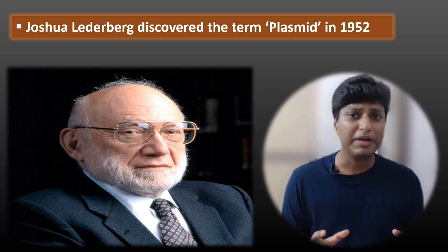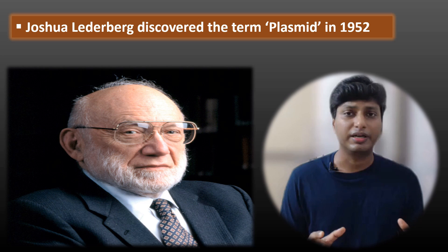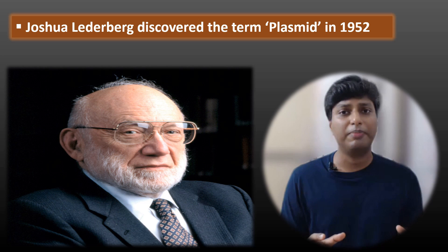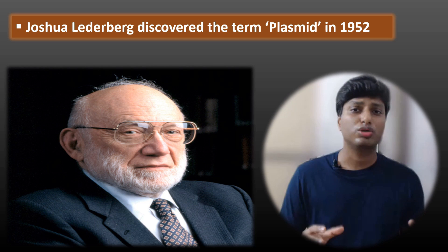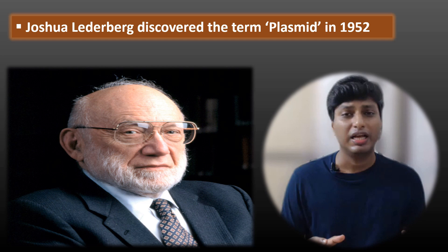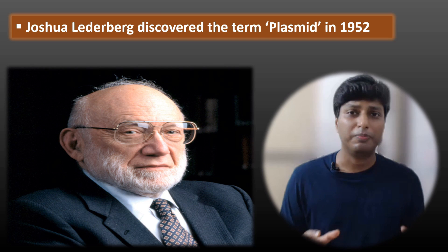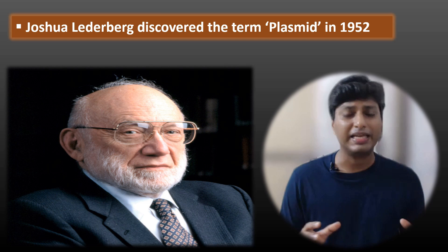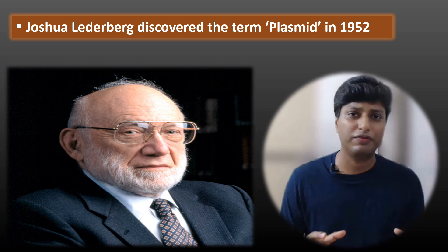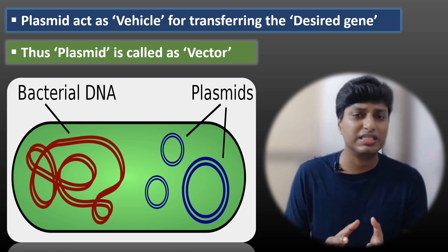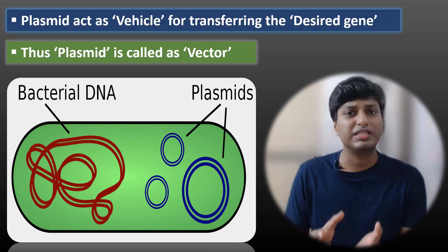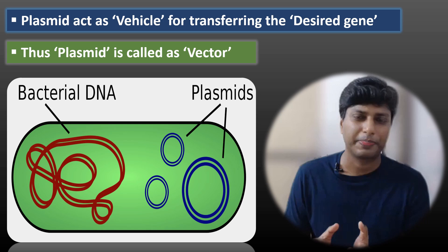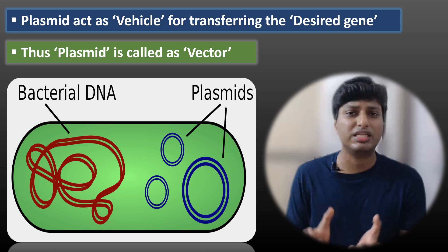The term plasmid was coined by a scientist named Joshua Lederberg back in the year 1952. Plasmid is basically an extra DNA which is present in certain bacteria. It is also called as extra chromosomal DNA.